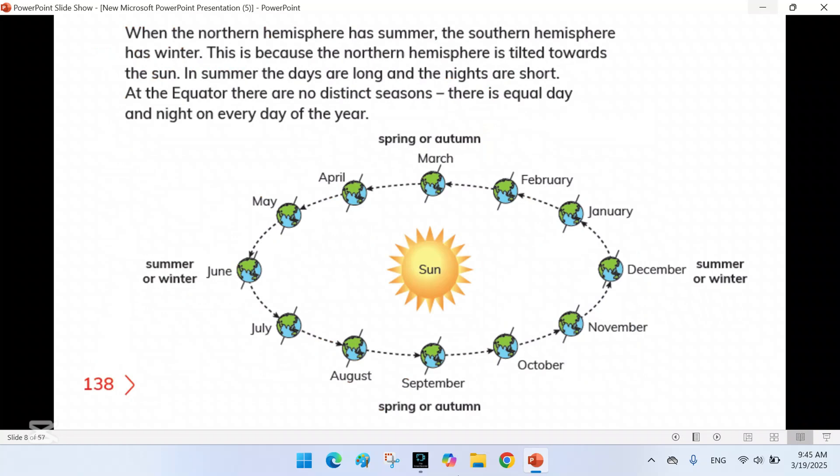The southern hemisphere experiences the opposite. When the northern hemisphere has summer, the southern hemisphere has winter and vice versa. Spring and autumn occur in March and September when neither hemisphere is tilted toward or away from the sun, resulting in equal day and night lengths.